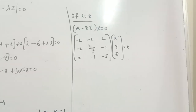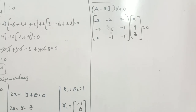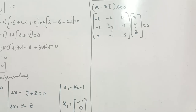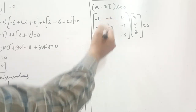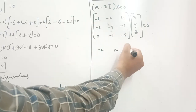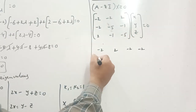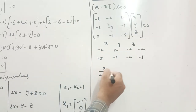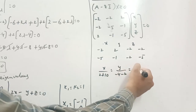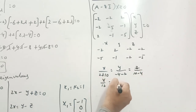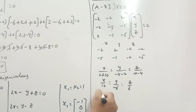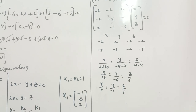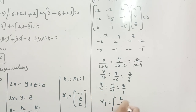Taking the first two rows and using the cross-multiplication method: starting with the middle terms -2 and 2, right terms 2 and -1, left terms -2 and -5, and middle terms again. We get x = 2+10 = 12, y = -(−4−2) = -6... wait, dividing by 6 gives x/2, y/(-1), z/1. So the third eigenvector X3 = [2, -1, 1].